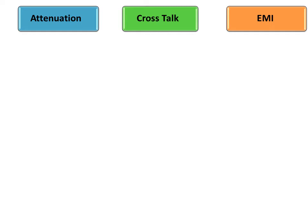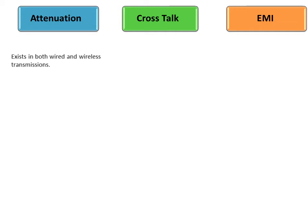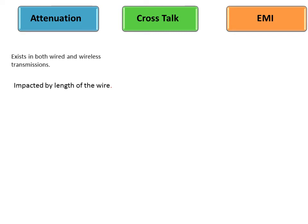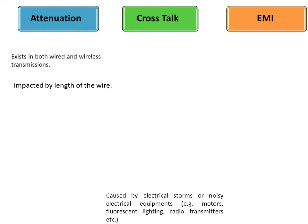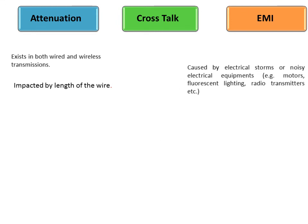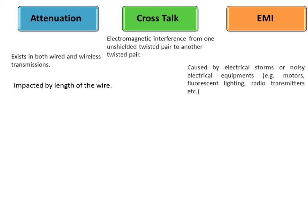Let us clarify how to differentiate between attenuation, crosstalk, and EMI. Attenuation exists in both wired and wireless transmission and is impacted by the length of the wire — it means weakening of signals. EMI is caused by electrical storms or noisy electrical equipment. Interference from one unshielded twisted pair to another twisted pair is called crosstalk.